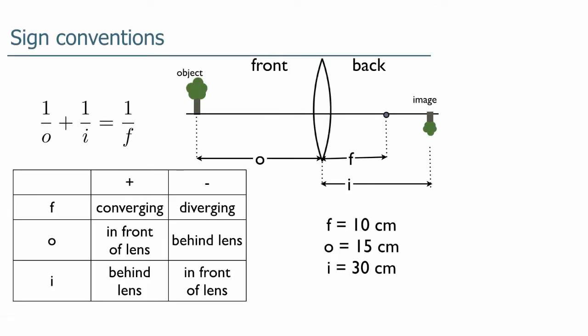This summarizes the sign conventions. This is definitely one of the little tables and pictures you should have in your growing cheat sheet. So we have our thin lens equation, our object, the front of the lens, the back of the lens, and in this case the image.